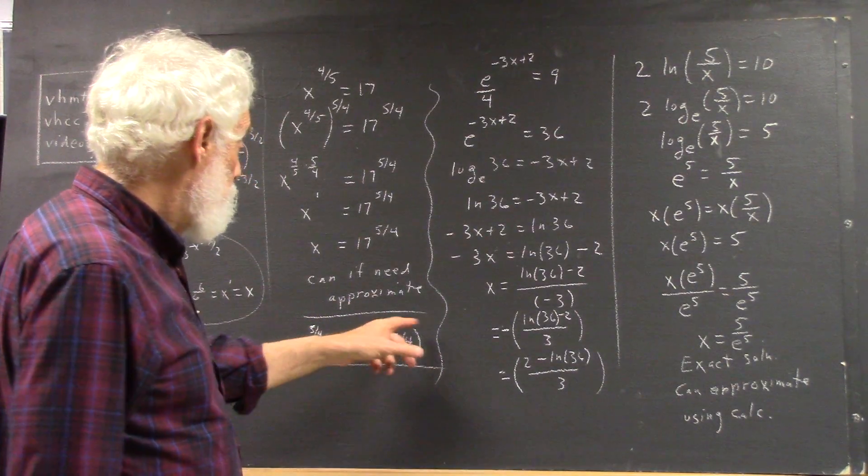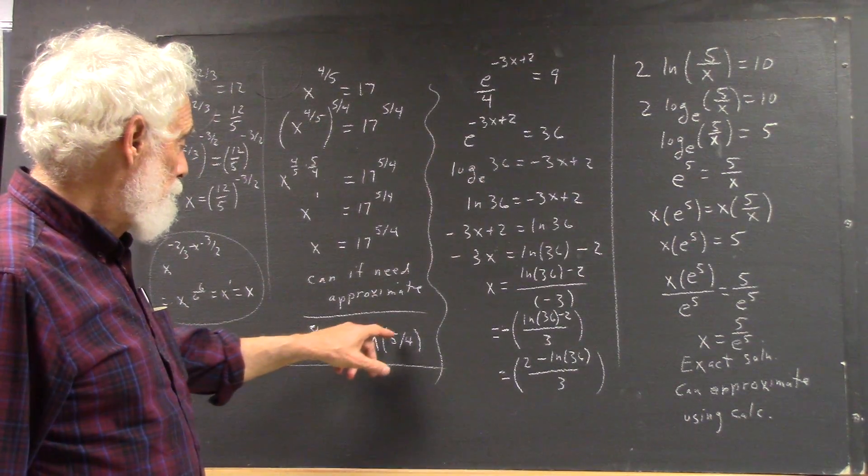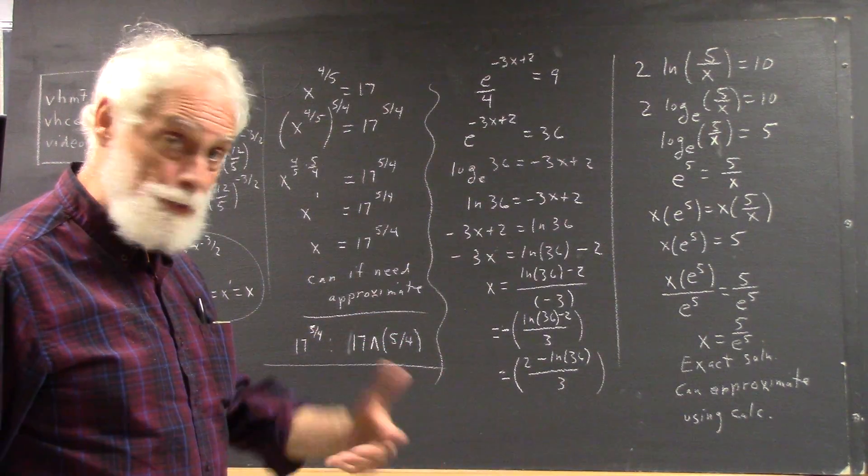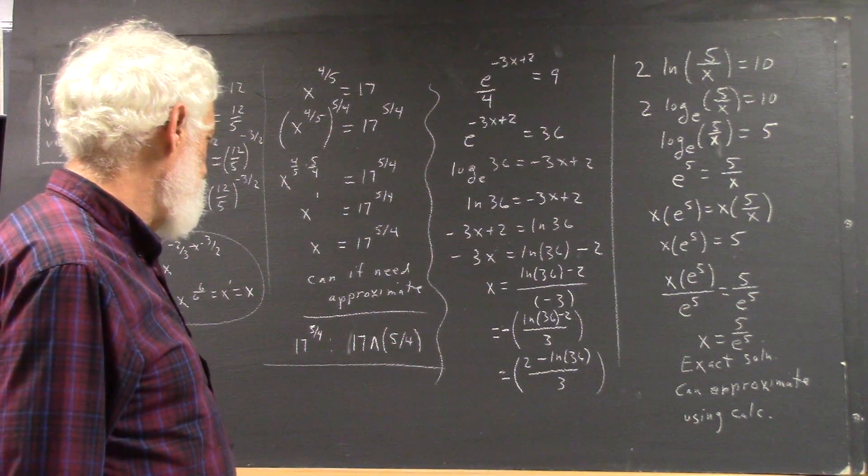Because if you didn't put parentheses around 5/4, the order of operations would take over. You would raise 17 to the 5th, then divide that by 4, which is very different than taking 17 to the 5/4 power. So be cautious about that.